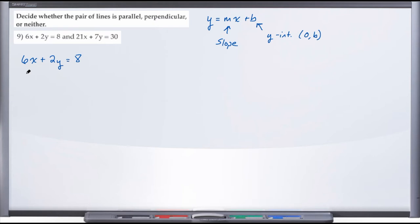So solving now for y, let's subtract 6x from both sides. And that'll give us 2y equals negative 6x plus 8. And then if we divide by 2 on both sides,